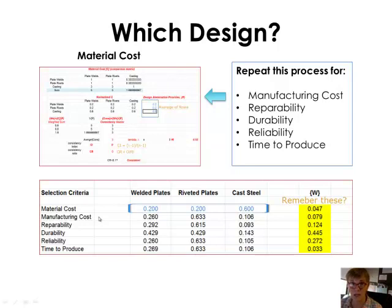When I do the analysis, looking at the different alternatives for designs, whether it be rivets, welds, or casting, I'll get this set of numbers for manufacturing, and we don't really have those numbers. I took these numbers from your text, so we didn't go through actually a pairwise comparison for that. But we're just saving a little time by generating these numbers for repairability, durability, reliability, and time to produce. But you saw how we got the 0.2 for weld, the 0.2 for riveted, and the 0.6 for casting.